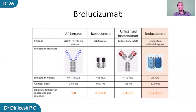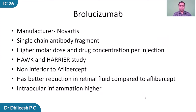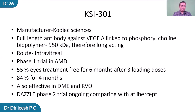First is the newer anti-VEGFs. Brolucizumab is a smaller molecule of 26 kilodaltons, enabling a higher molar dose within a single injection, manufactured by Novartis. In the Hawk and Harrier study, it was found to be non-inferior to aflibercept in wet AMD, with better potential for reducing retinal fluid compared to aflibercept; however, a small side effect was a higher rate of intraocular inflammation. Another drug is KSI-301, manufactured by Kodiak Sciences, a full-length antibody against VEGF-A linked to a biopolymer delivering a large 950 kilodalton molecule that stays in the eye for longer action. In the phase one trial, 55% of eyes remained treatment-free for six months or longer and 84% for around four months after three loading doses. The TEAL phase two trial comparing it to aflibercept is ongoing.